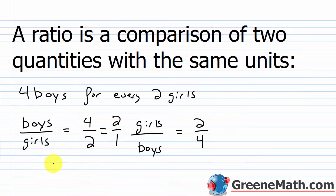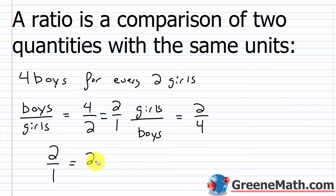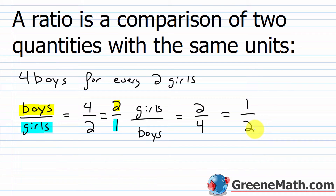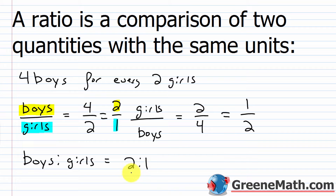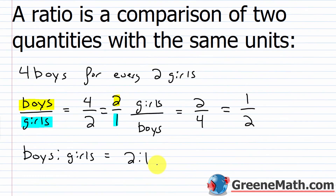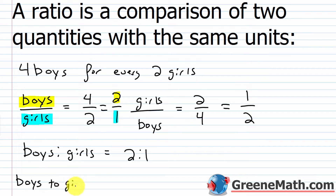One main difference from fractions: if I'm working with a fraction I'd write two over one simply as two, but with a ratio I leave the one there because I'm saying two boys for every one girl. Some other ways to write this ratio: using a colon, boys to girls would be written as 2:1, and you can also write it using the word 'to' — 'two to one'. Most commonly you'll see it as a fraction or with a colon.